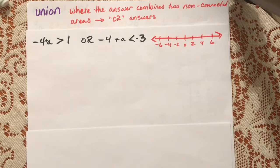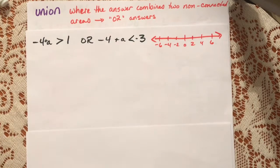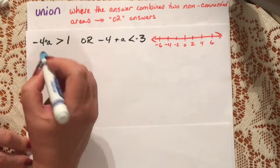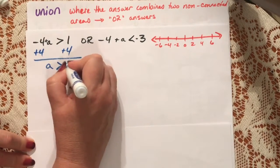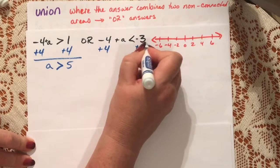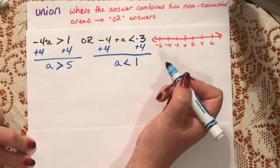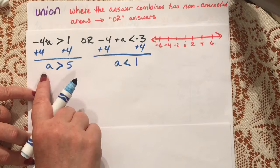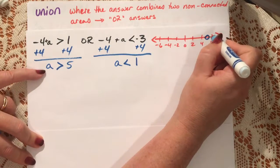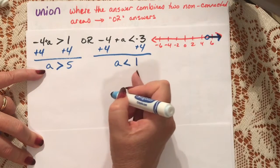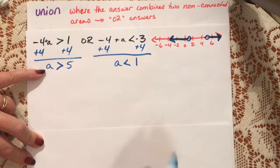For example, we have the problem: negative 4 plus a is larger than 1, or negative 4 plus a is smaller than negative 3. We're going to solve both problems. Add 4 to both sides: a is larger than 5. Add 4 to both sides of the second: a is smaller than 1. When we graph this, we have an open circle on 5 and a is larger than it, and an open circle on 1 and a is smaller than it. That's our union.